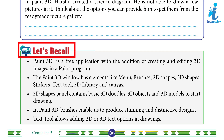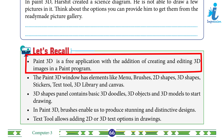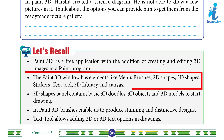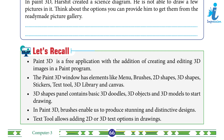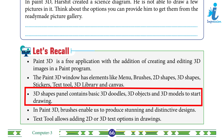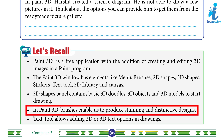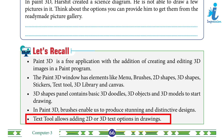Let's recall. Paint 3D is a free application with the addition of creating and editing 3D images in a Paint program. The Paint 3D window has elements like Menu, Brushes, 3D Shapes, 2D Shapes, Stickers, Text, 3D Library, and Canvas. The 3D Shapes panel contains basic 3D Doodles, 3D Objects, and 3D Models to start drawing. In Paint 3D, Brushes enable us to produce stunning and distinctive designs. The Text tool allows adding 2D or 3D text options in drawings.